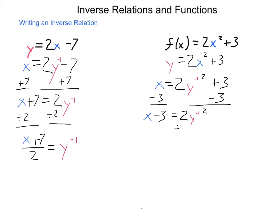Next step is to divide by 2. This brings us out to x minus 3 over 2 equal to that y inverse squared. Now solving this one last step for y inverse, I'm going to take the square root of both sides. We have plus or minus the square root of x minus 3 halves being equal to our y inverse.